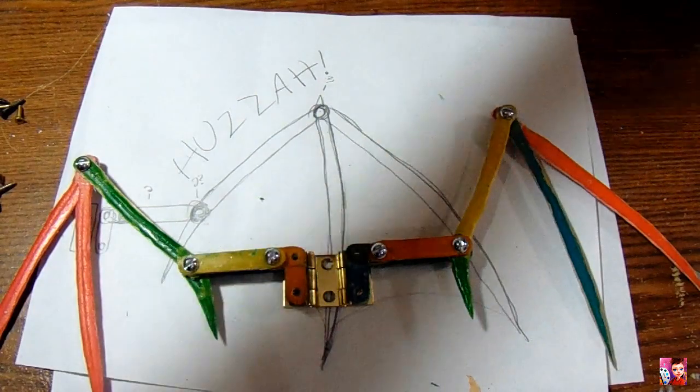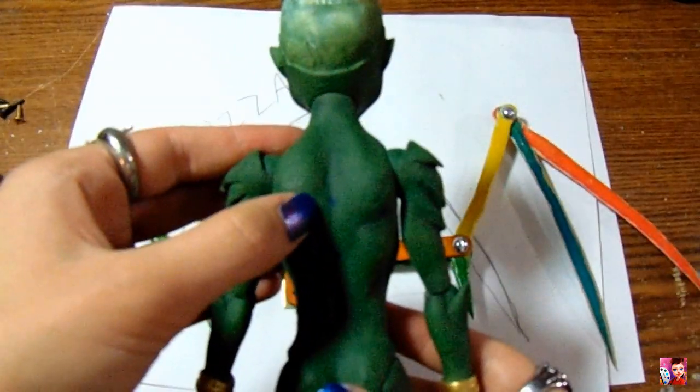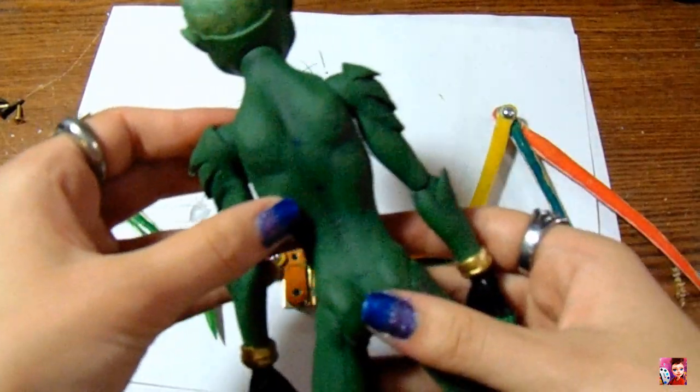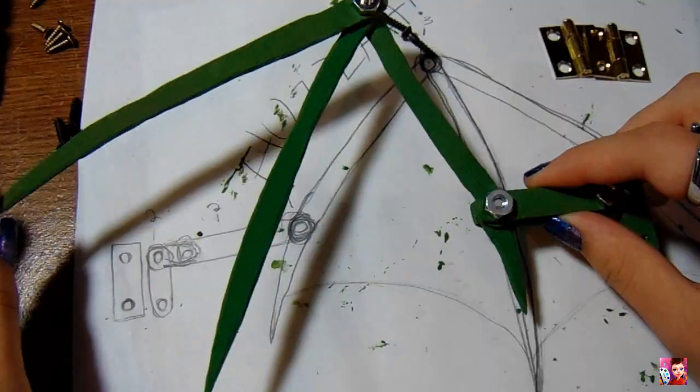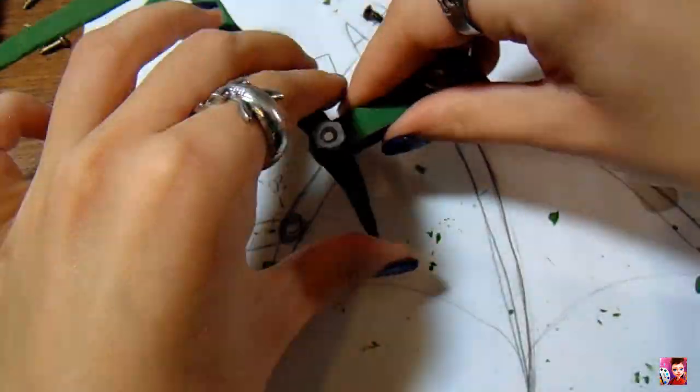So now that they're both assembled, I mark his back where the hinges should be. And before I attach them, I paint the sticks green, and I use thread locker to make sure that the nuts stay tight.